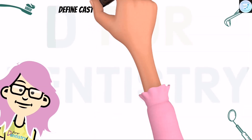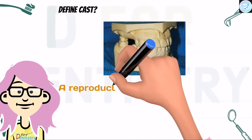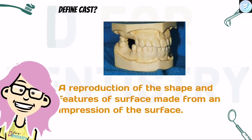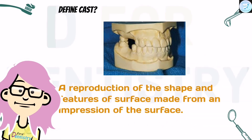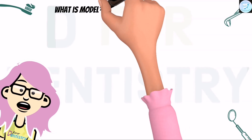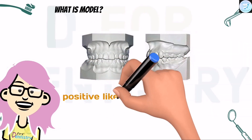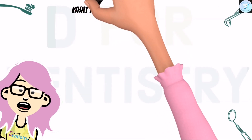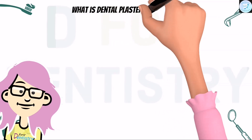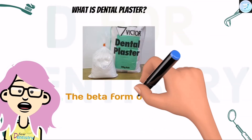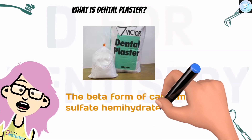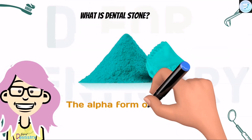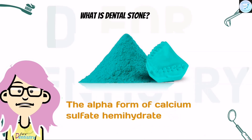Question one: Define cast. A cast is a reproduction of the shape and features of a surface made from an impression of the surface. Next, what is a model? A positive likeness of an object is called a model. Next, what is dental plaster? The beta form of calcium sulfate hemihydrate is dental plaster. And what is dental stone? The alpha form of calcium sulfate hemihydrate is dental stone.